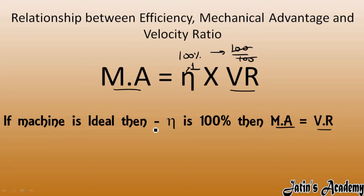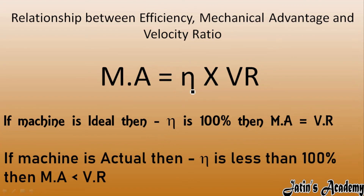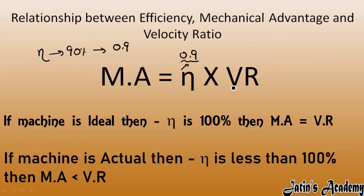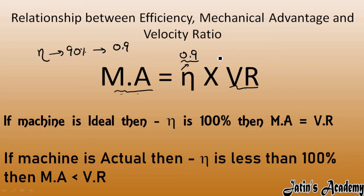When the machine is an actual machine, efficiency is less than 100%. For example, if efficiency is 90%, that means 0.9, so mechanical advantage equals 0.9 into velocity ratio — the mechanical advantage value will decrease. This is a very important point: when the machine is actual, efficiency is less than 100%, and mechanical advantage is less than velocity ratio.